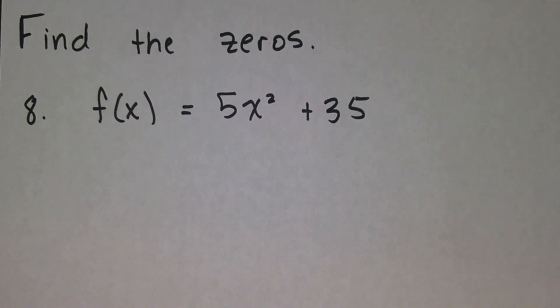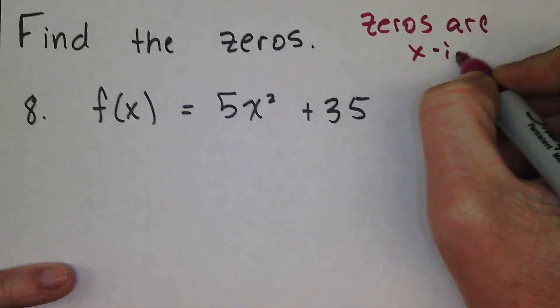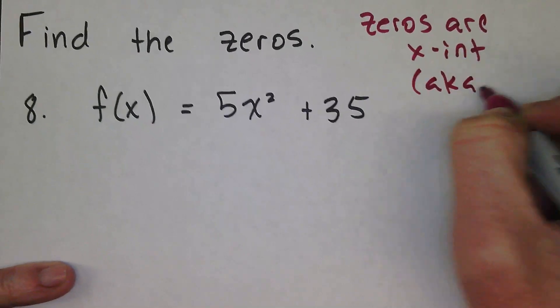We're asked to find the zeros here. The zeros are our x-intercepts, and they're also sometimes known as the solutions.